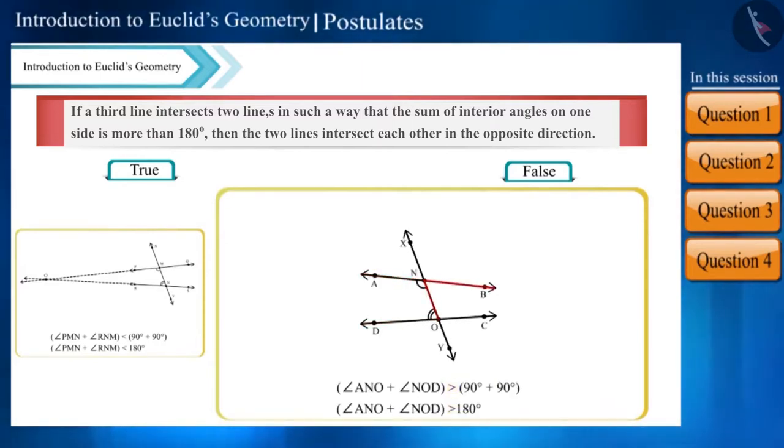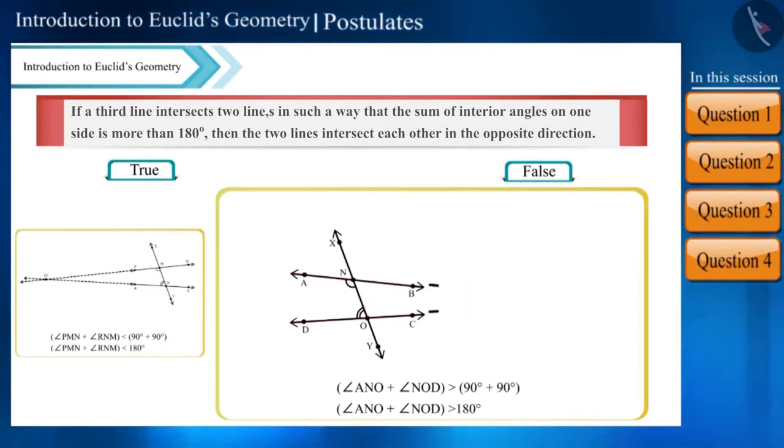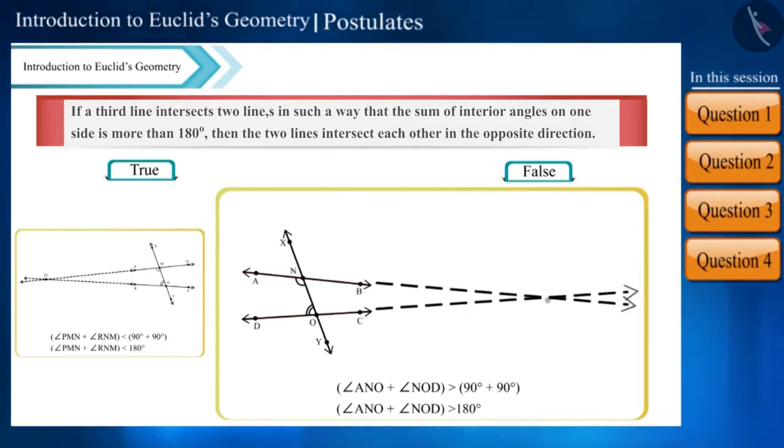If the angle sum is more than 180 degrees, the sum of interior angles on the other side will be less than 180 degrees and the lines will intersect each other on that side. Therefore the given statement is true.